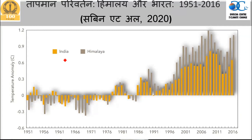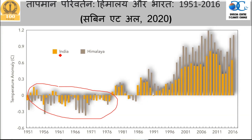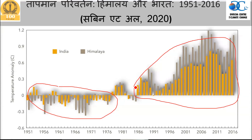We have also seen how temperature is changing in the Himalayas compared to the Indian subcontinent. When India was cooler, the mountains were much cooler — particularly in the 1950s, 60s, and 70s. As compared to now, the Indian subcontinent was much cooler, but the Himalayan mountains were even cooler than the Indian subcontinent. When we entered the warm phase in the 80s and 90s, the Himalayan region became much warmer than the Indian subcontinent.